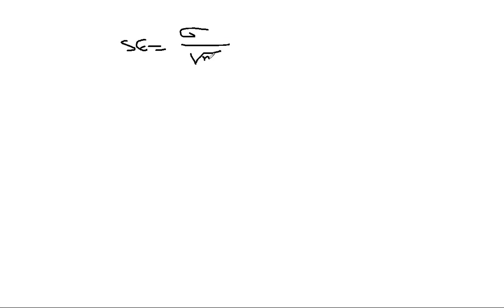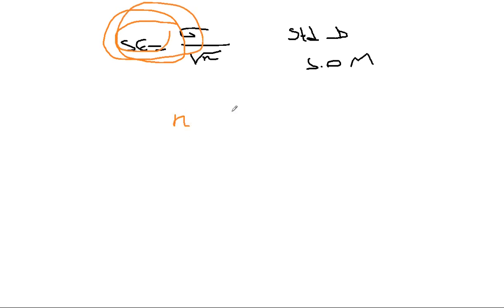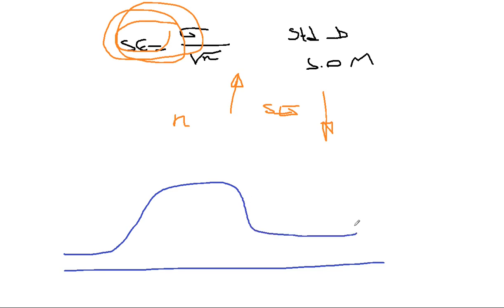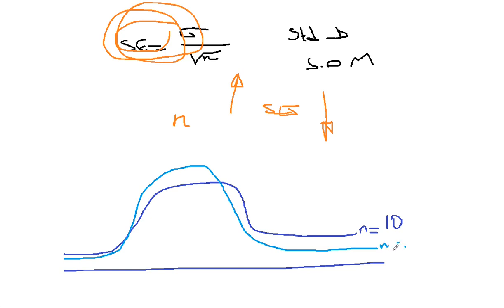We also spent time on the standard error, which is sigma divided by the square root of n — the standard deviation of the sampling distribution of the means. What affects the standard error is the sample size: as the sample size gets bigger, the standard error gets smaller. If you draw multiple sampling distributions of the mean, say for n equal to 10, then increase n to 15, the sampling distribution remains normal but becomes narrower.